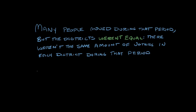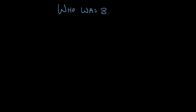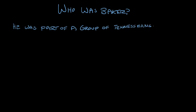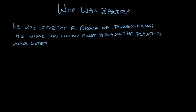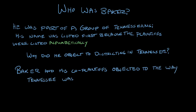This case took place originally in Tennessee and was brought by a man named Charles Baker. He was among a group of citizens — like many other Supreme Court cases, it's an accident that his name is the one by which we remember the case. They listed the participants as plaintiffs alphabetically, and Mr. Baker was the first one on the list. He was on the board of a judicial body in Tennessee and was among several citizens who objected to the way the state legislature was apportioned.